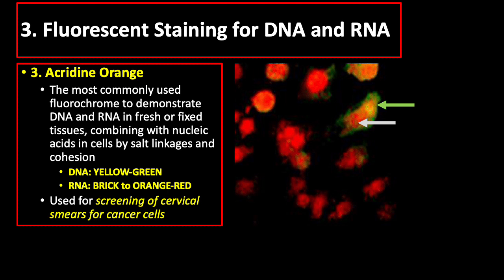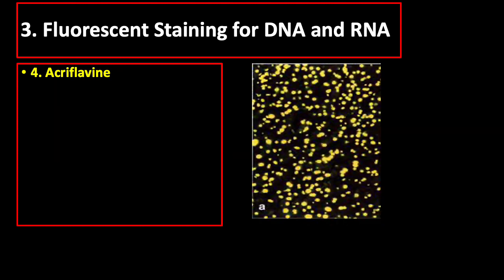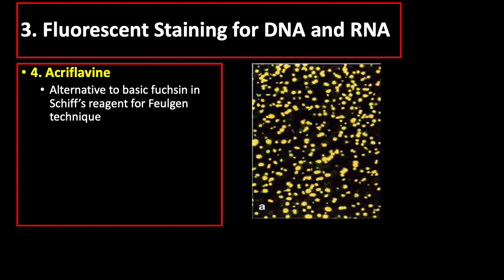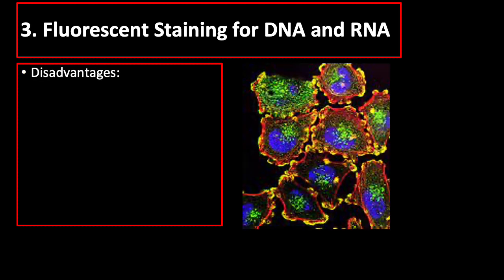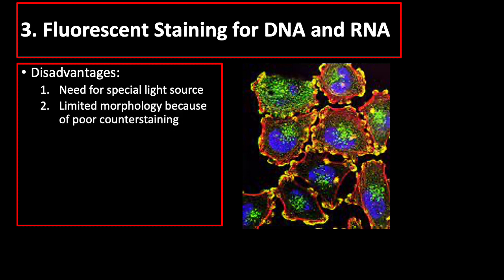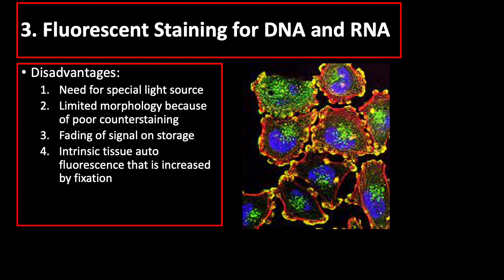Acridine orange is most commonly used for screening cervical smears for cancer cells. Acriflavin can be used as an alternative to basic fuchsin in Schiff's reagent for the Feulgen technique, staining DNA fluorescent yellow. Known disadvantages of fluorescent labels include the need for a special light source, limited morphology due to poor counter-staining, fading of the signal on storage, and intrinsic tissue autofluorescence that is increased by fixation.